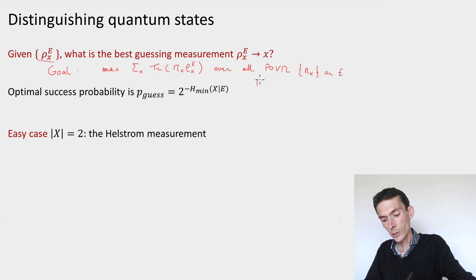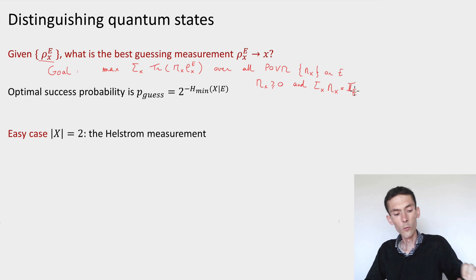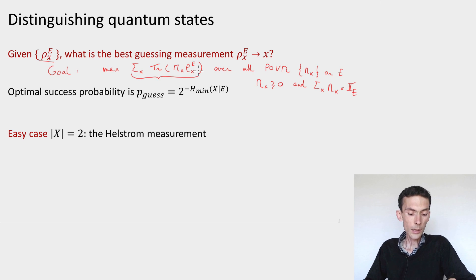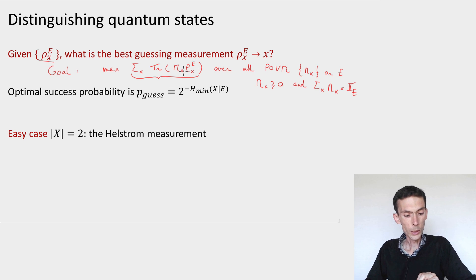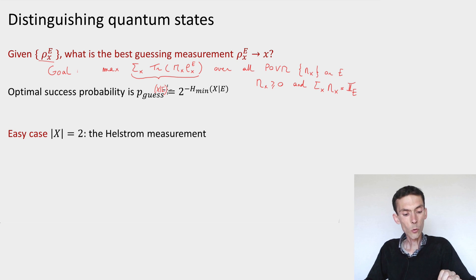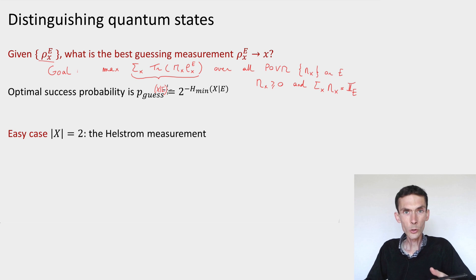Just to remind you, the definition of a POVM is that the operators m_x should be positive semi-definite and should sum to the identity on E when summed over all x. This expression that we're trying to maximize is the probability that, given the state ρ_x with probability trace of ρ_x, the measurement m performed on the state returns outcome x. This is exactly the guessing probability of x given E, which you saw when you discovered the min entropy. So the quantity we're estimating is 2 to the minus min entropy of x given E.